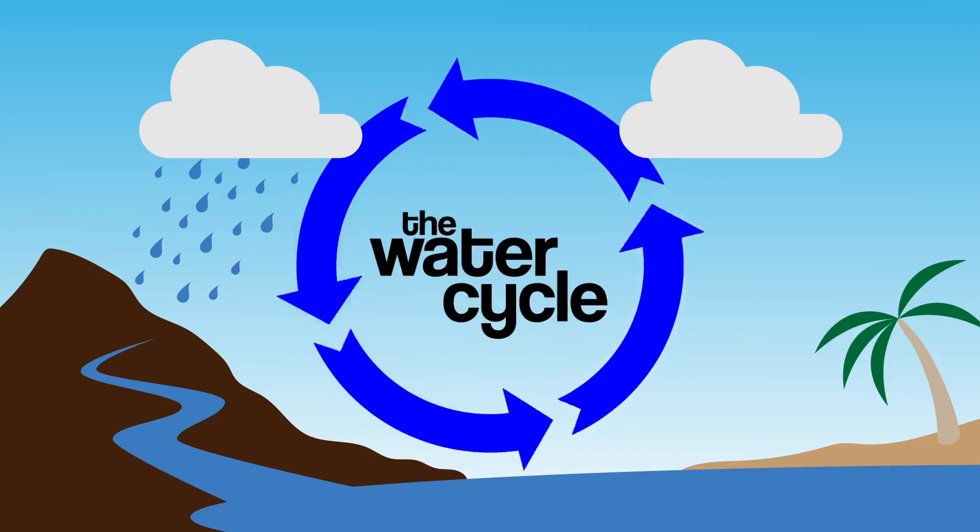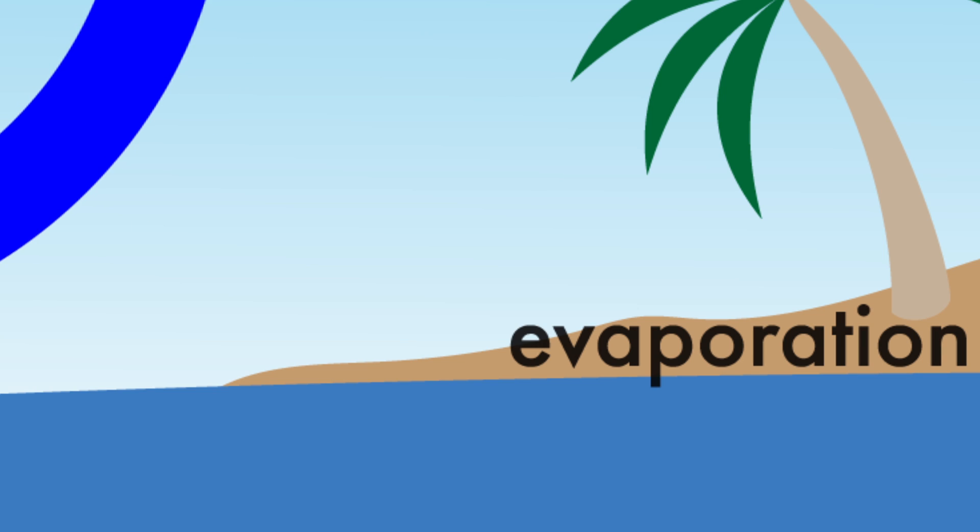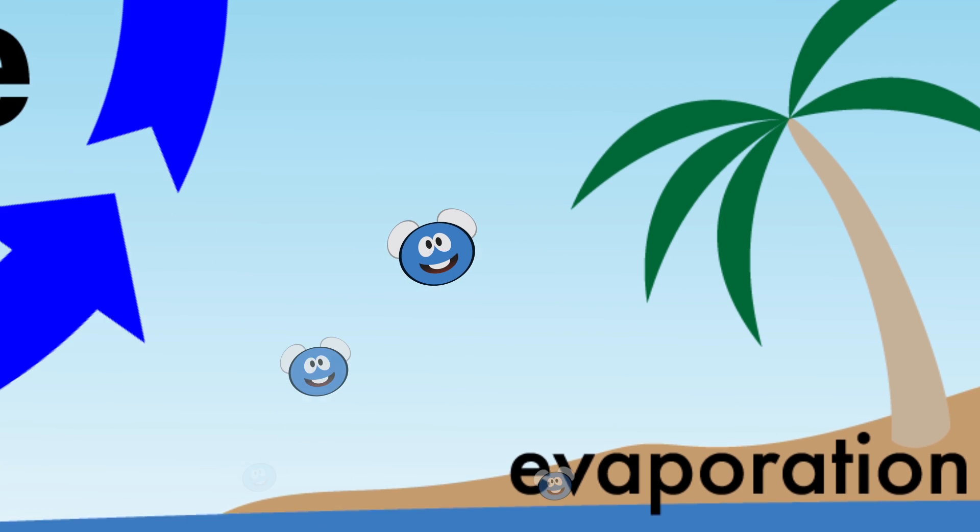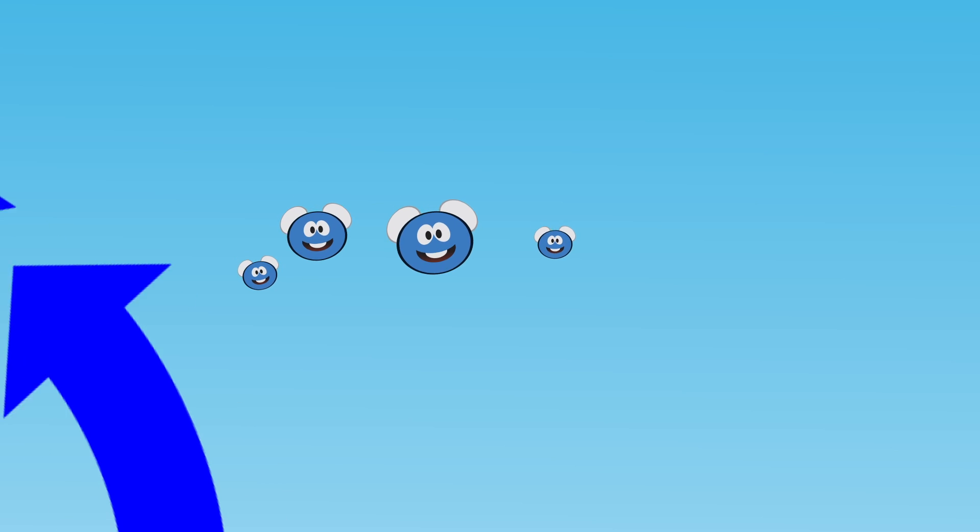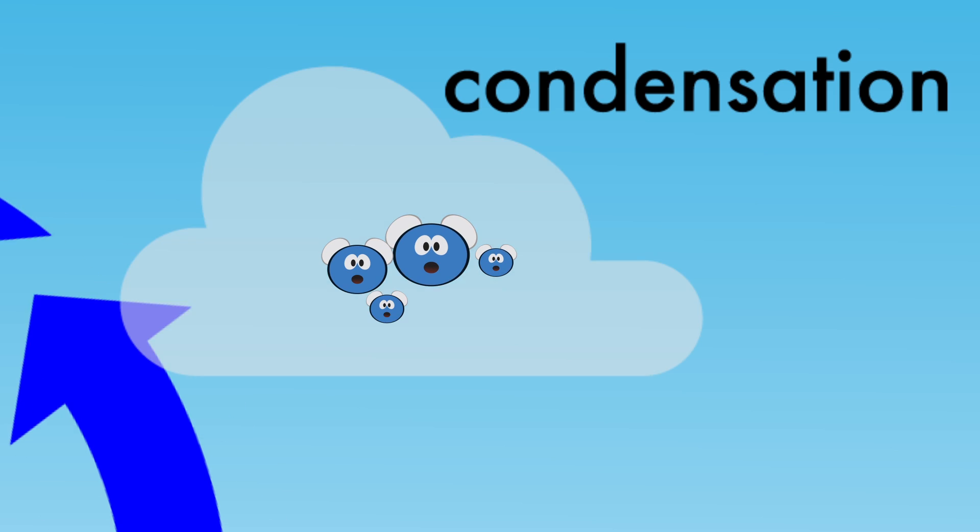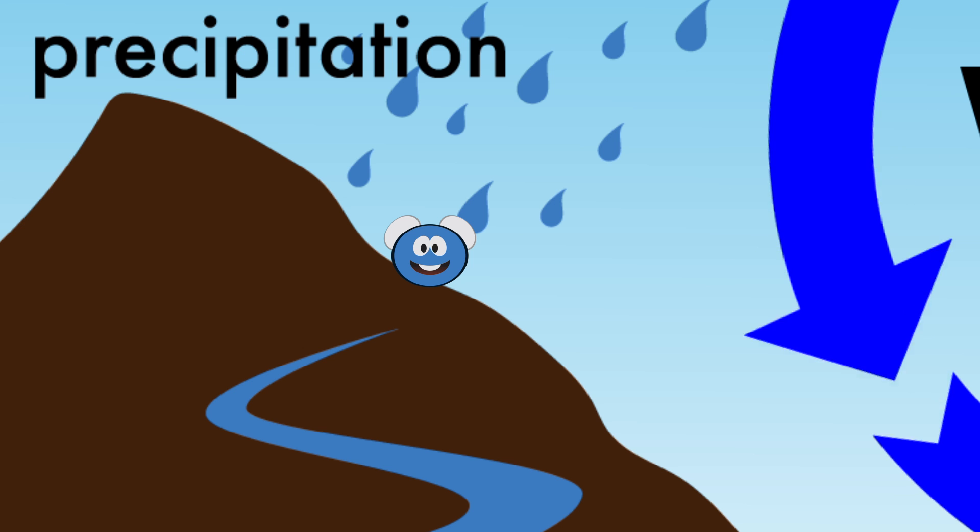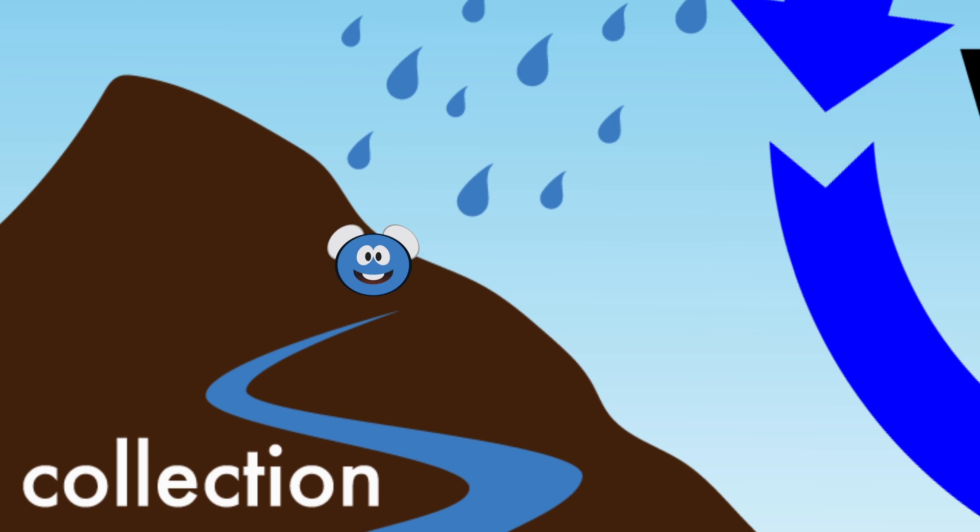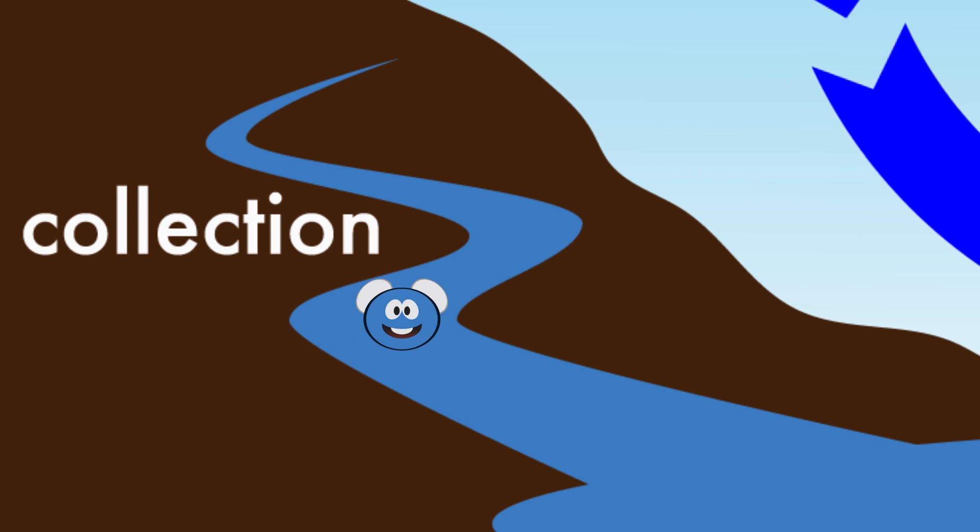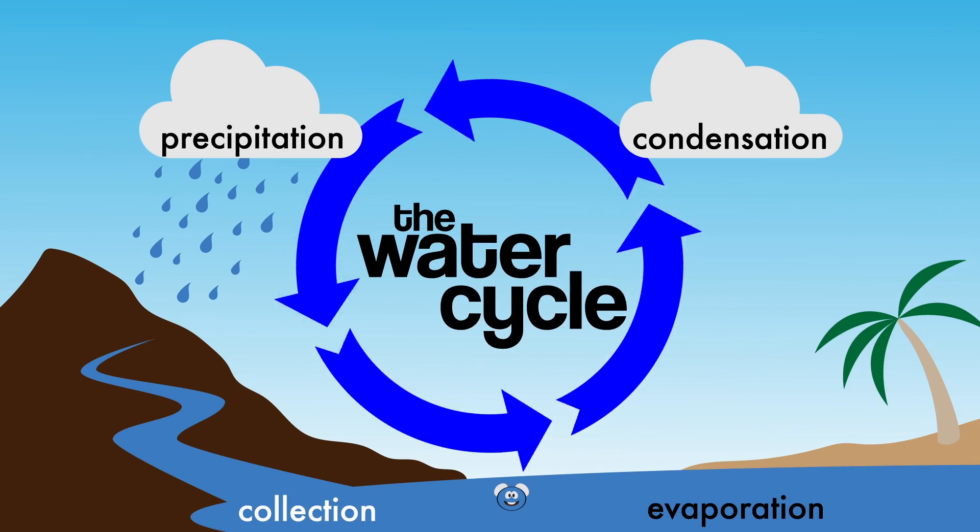So today we learned the parts of the water cycle. First, the water evaporates. That means it goes up into the air. Then it condenses. That means it comes together to form clouds. Then it precipitates. That's rain, or snow if it's cold. And finally, it collects in lakes and oceans to start the cycle again.